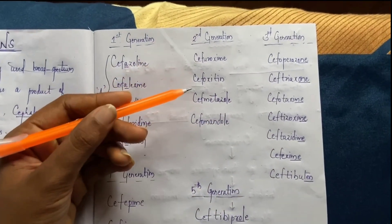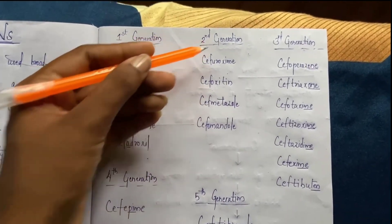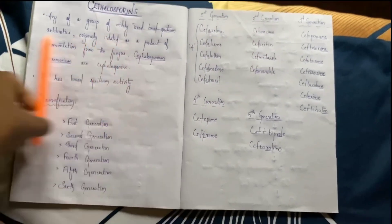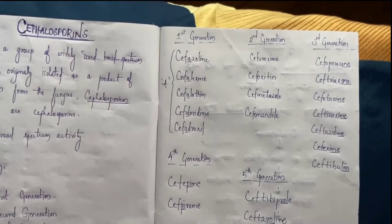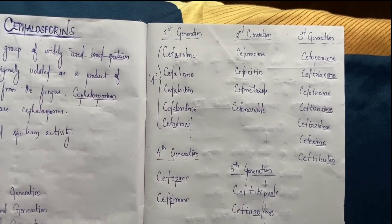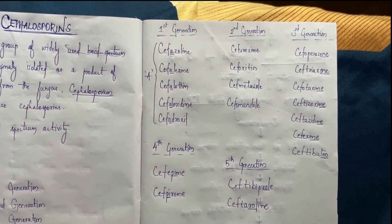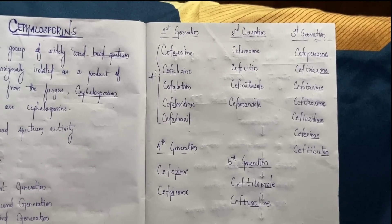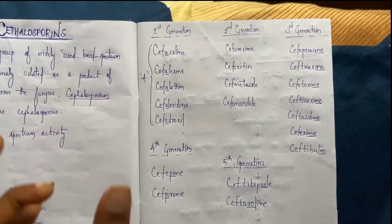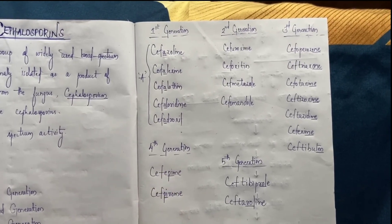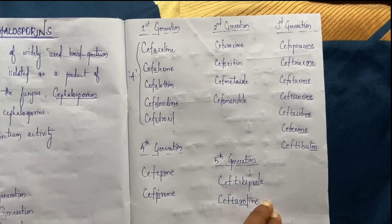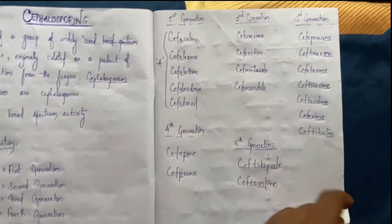So this is the clue for the classification of Cephalosporin. If A comes after Ceph, it is first generation. If one, me, or ten comes at the end of the Ceph medicine, it is third generation. If pi comes at the end, that is fourth generation. And if roll comes, that is fifth generation. What remains is second generation.